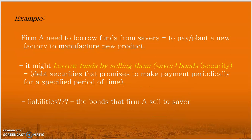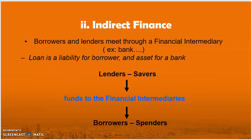For example, Firm A needs to borrow funds from savers or lenders because they plan to build a new factory to manufacture new products. It might borrow funds by selling the lender-savers a bond — a debt security that promises to make periodic payments for a specific period of time. So the liability is the bond that Firm A sells to the savers. In indirect finance, funds are routed through financial intermediaries, such as banks. Loans made by borrowers are recognized as a liability to the borrower and as assets to the bank, where the bank earns profit through those assets.